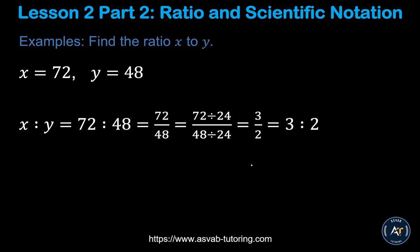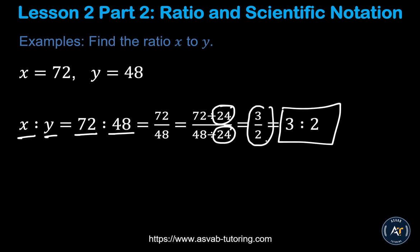Let's do another example. If x equals 72 and y equals 48, then x ratio y is 72 ratio 48. If you simplify by dividing top and bottom by 24, you get 3 over 2, so the ratio is 3 ratio 2.